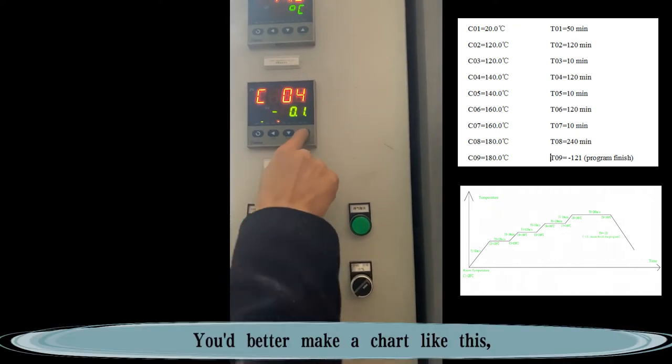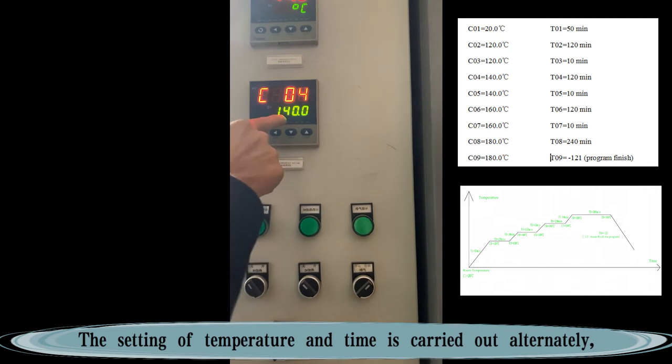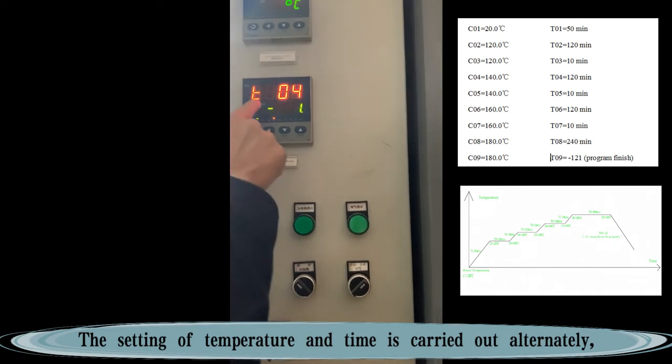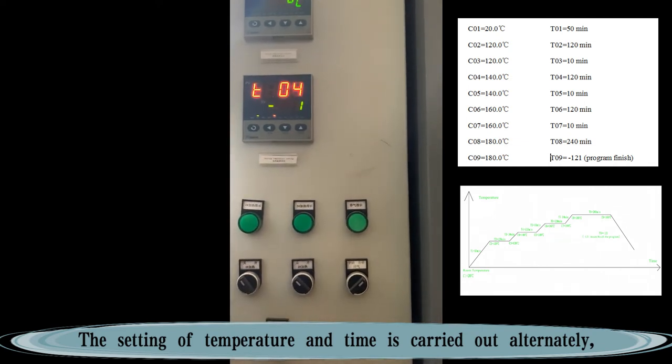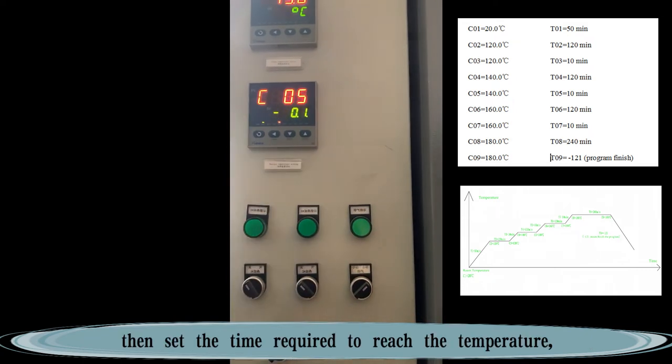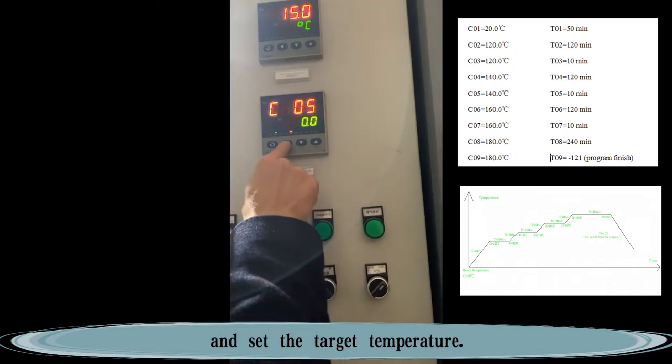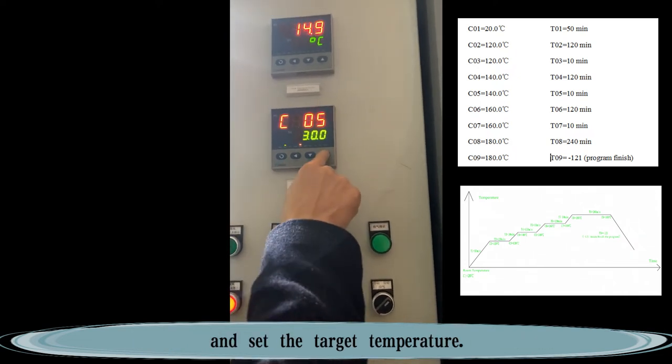You'd better make a chart like this, which can help you set the program more easily. The setting of temperature and time is carried out alternately. First, set an initial temperature. Then set the time required to reach the temperature, and set the target temperature.